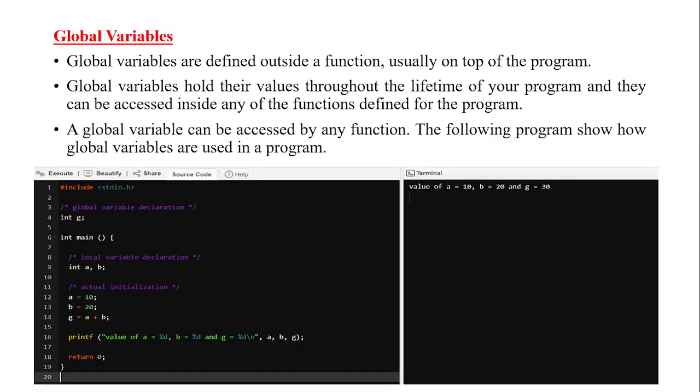Global variables. Global variables are defined outside a function usually on top of the program. Global variables hold their values throughout the lifetime of a program and they can be accessed inside any of the functions defined for the program. A global variable can be accessed by any function.